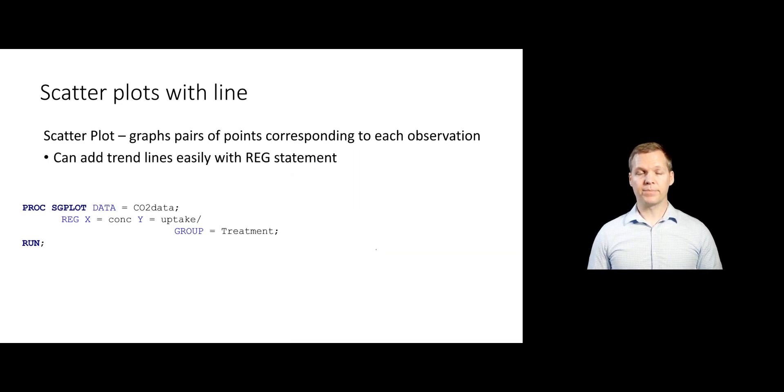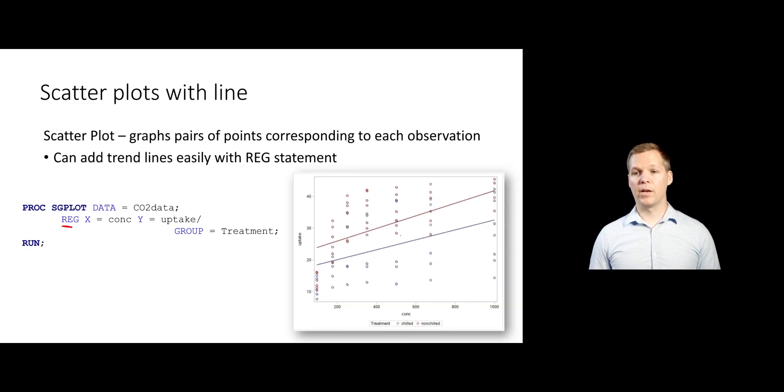We can also add trend lines. So you may have heard of just doing like simple linear regression on a scatter plot. And so you can do that very easily, just changing our scatter to a reg statement instead. Everything else here has stayed the same. This still creates your scatter plot, but then it overlays the simple linear regression fits for both the chilled and non-chilled group in this case.